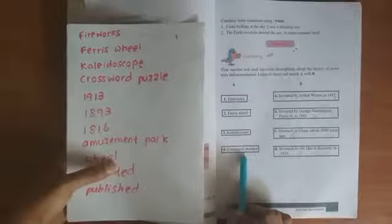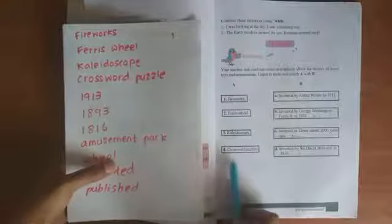This is your listening activity. Your teacher will read out some descriptions about the history of some toys and amusements. Listen to them and match A and B. The first thing you are going to do is copy this down into your writing book nicely and clearly.